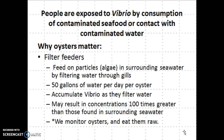Oysters feed on particles — algae or phytoplankton — found in the surrounding seawater. They filter water through their gills, which have a very fine gill structure. Filtering about 50 gallons of water per day per oyster means an oyster can accumulate a lot of Vibrio over the course of any given day. If you sample water and sample oysters nearby, you'll see Vibrio at about 100 times greater concentration in the oysters than in the surrounding water — and that's a function of this filter feeding.